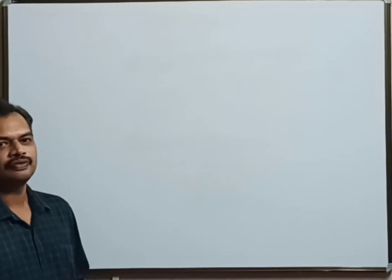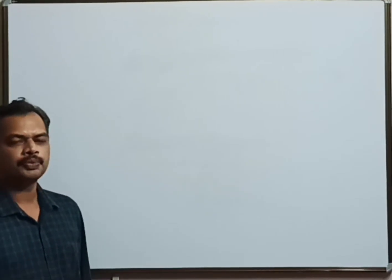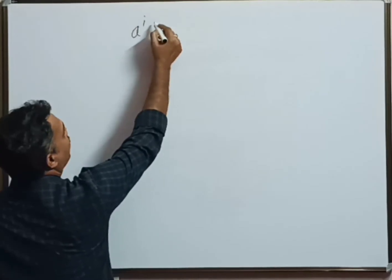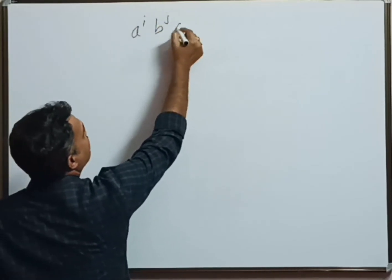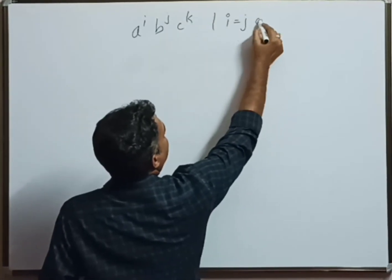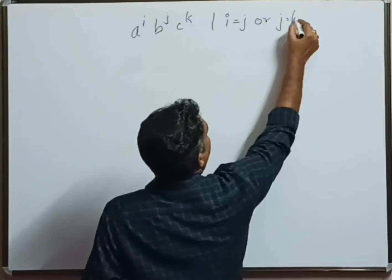Let's construct a CFG for the given problem. The problem is a to the power i, b to the power j, c to the power k, such that i equals j or j equals k.